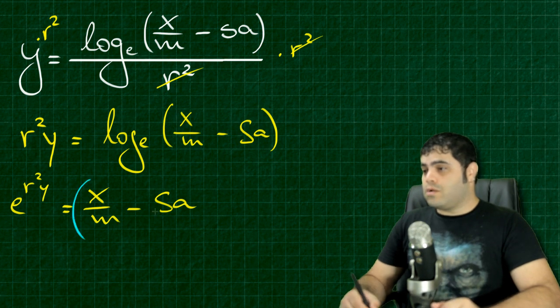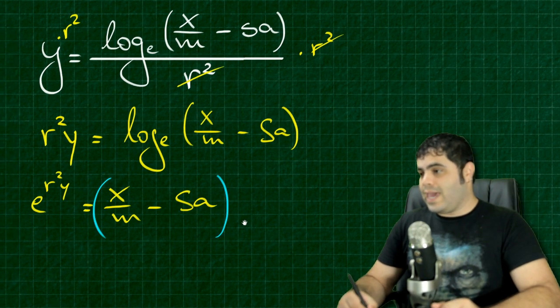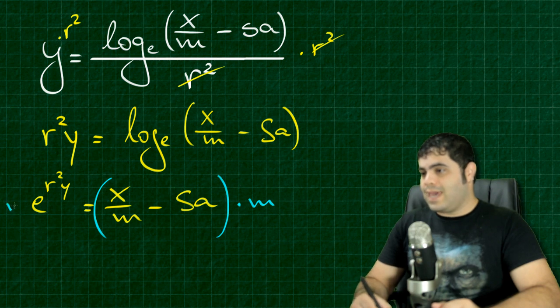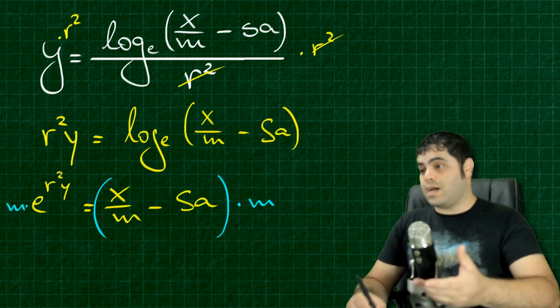So now what I want to do is multiply both sides by M. So this thing times M and M times E to the R squared times Y.